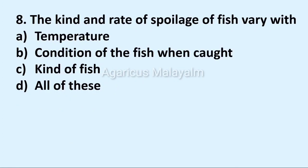Eighth question: the kind and rate of spoilage of fish vary with. Option A: temperature. Option B: condition of the fish when caught. Option C: kind of fish. Option D: all of these. Correct answer: Option D, all of these.